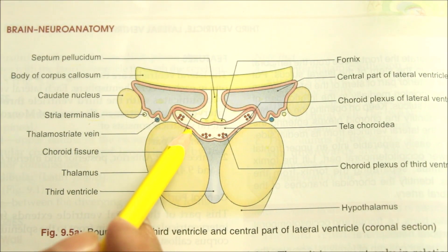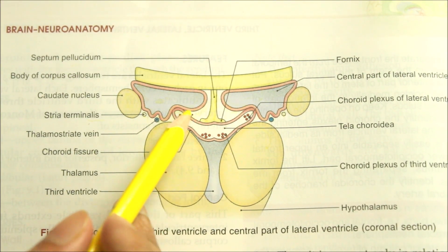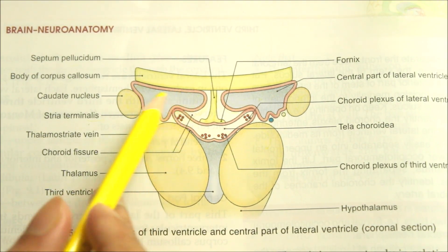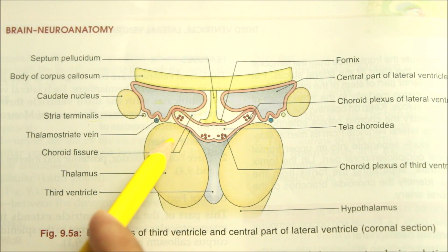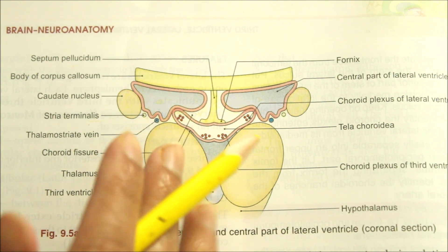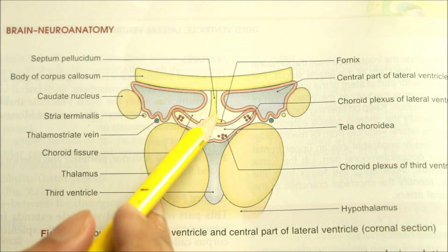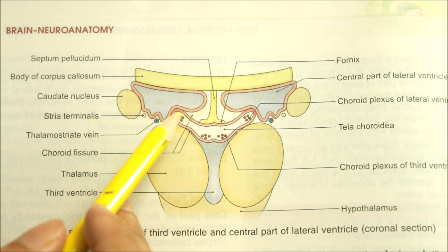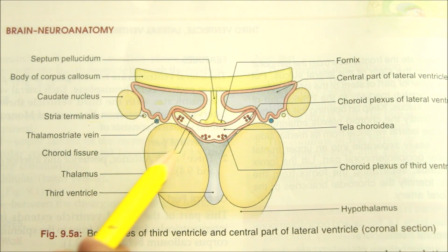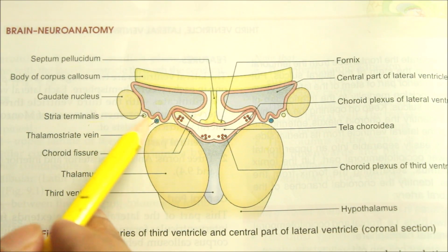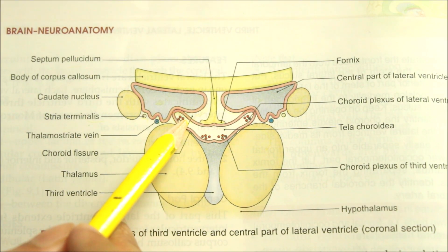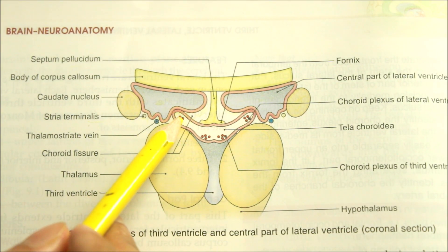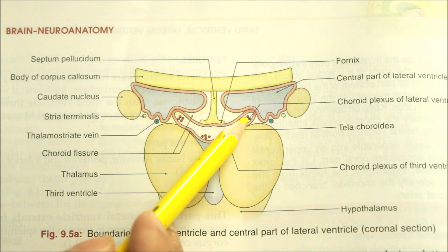Now let's look at the choroid fissure. It is the line along which the choroid plexus invaginates into the lateral ventricle — a C-shaped slit in the medial wall of the cerebral hemisphere. It starts at the interventricular foramen and passes around the thalamus and cerebral peduncle to the uncus. Its convex margin is bounded by the fornix, fimbria and hippocampus, while its concave margin is bounded by the thalamus, tail of the caudate nucleus, and stria terminalis. At the fissure, the pia mater and ependyma come into contact and both are invaginated into the lateral ventricle by the choroid plexus.